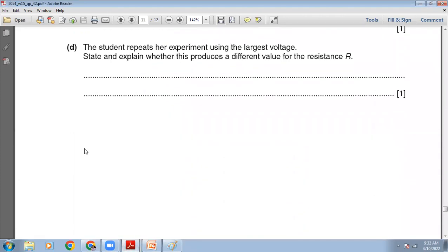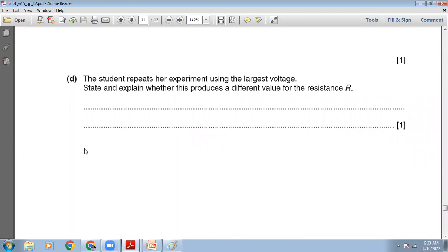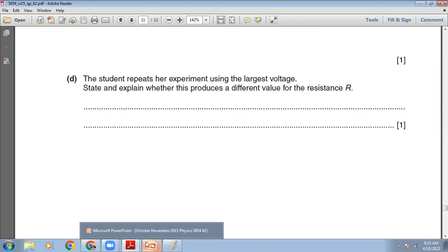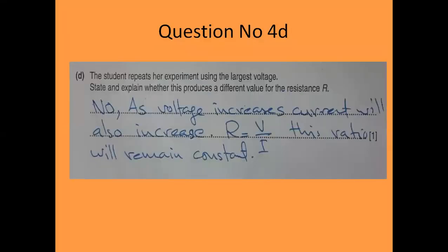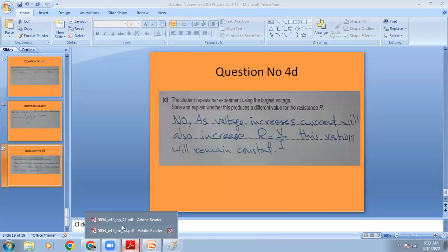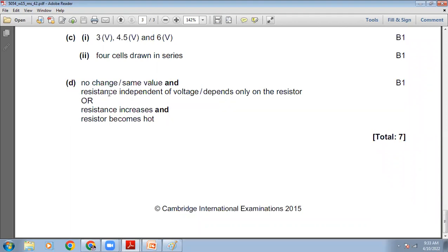If the student repeats the experiment using the largest voltage of 6 V, will this produce a different value for resistance R? No — because we are using a fixed resistor. When you increase the voltage, the current also increases proportionally, so the ratio V/I, which equals resistance R, remains constant. The marking scheme confirms: no change, same value; resistance is independent of voltage and depends only on the resistor.